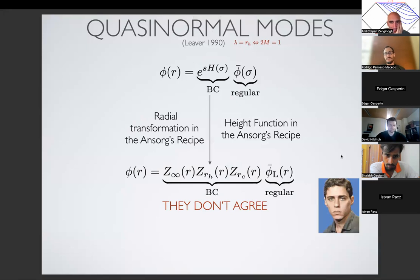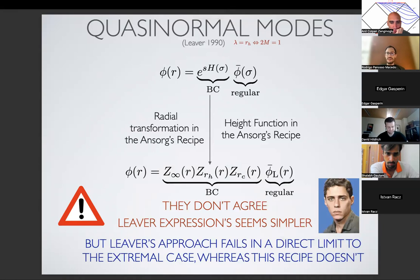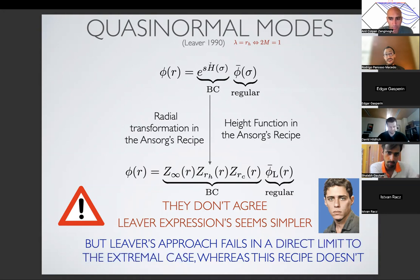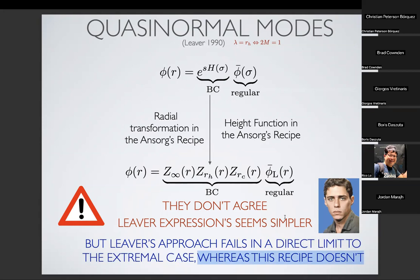What's going on? Why is it not working? And even worse, it seemed to me that Leaver's expressions were a bit simpler than what I was getting. There was something weird. But there was also a benefit coming from our side: whatever Leaver was doing, it fails if you take a direct limit to the extremal case — it doesn't work, you have to go to extremal and start from scratch. But if I follow the Anzorge recipe and pick up the boundary conditions within this framework, I can go all the way to the extremal case, even though the expressions become a bit more complicated. So there's a balance: they don't agree, Leaver is simpler, but he cannot reach the extremal case directly.